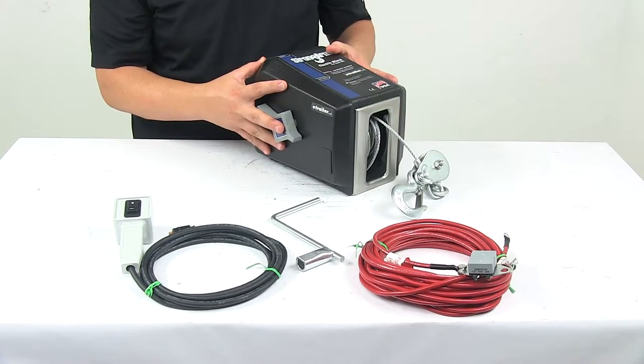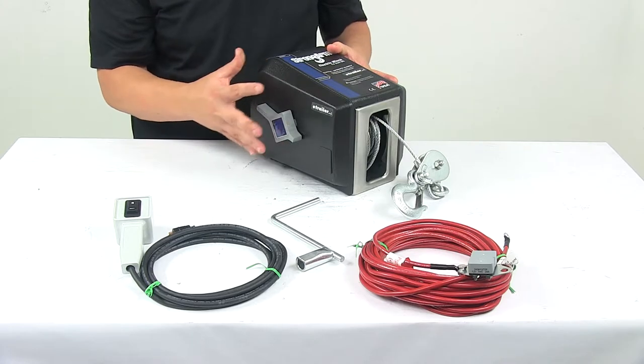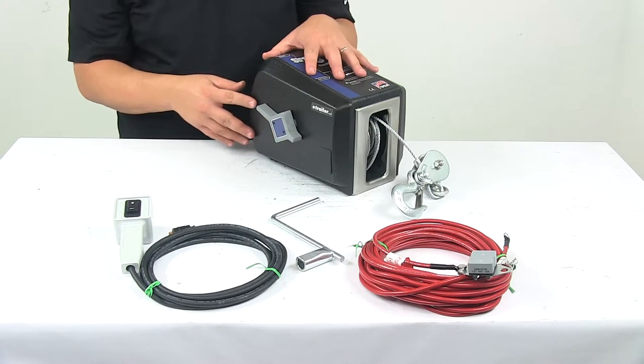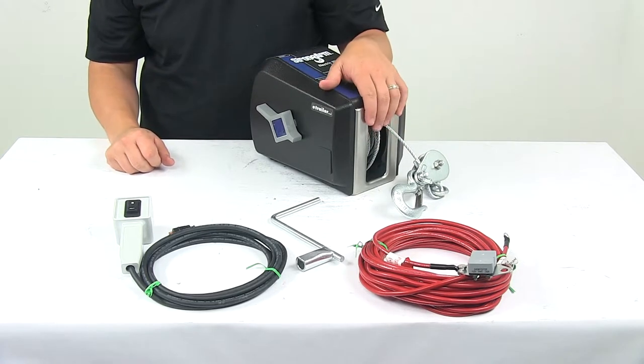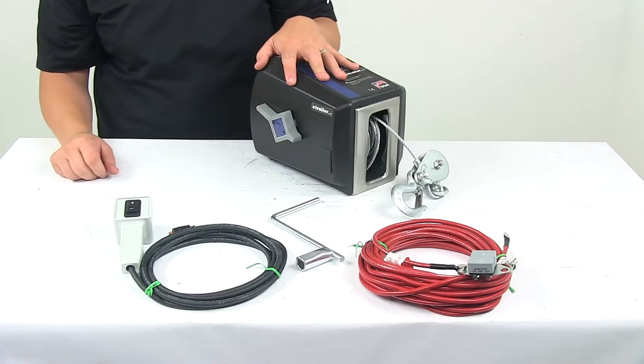The casing is a high impact, weather resistant case. It provides excellent protection for internal components. It's also safer than open reel models. Right here on the front, we have the brushed stainless steel front plate for superior rust resistance.